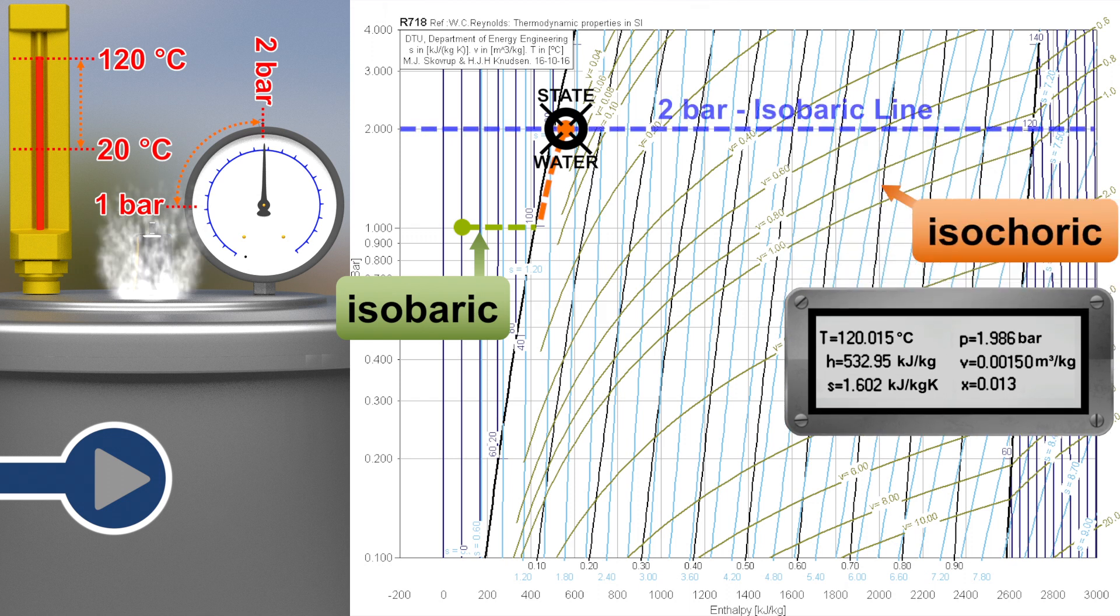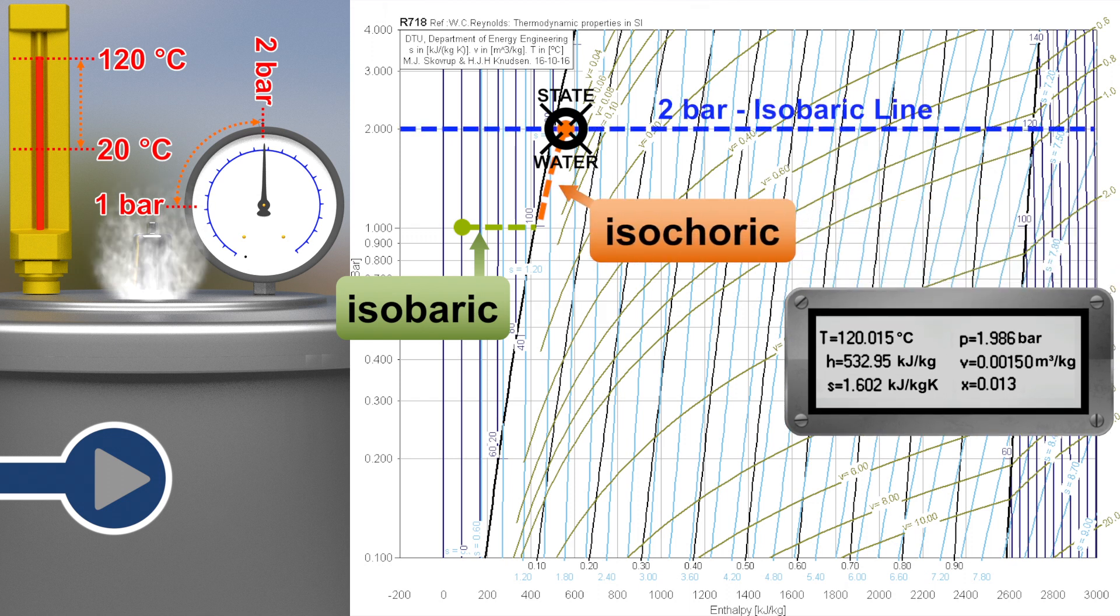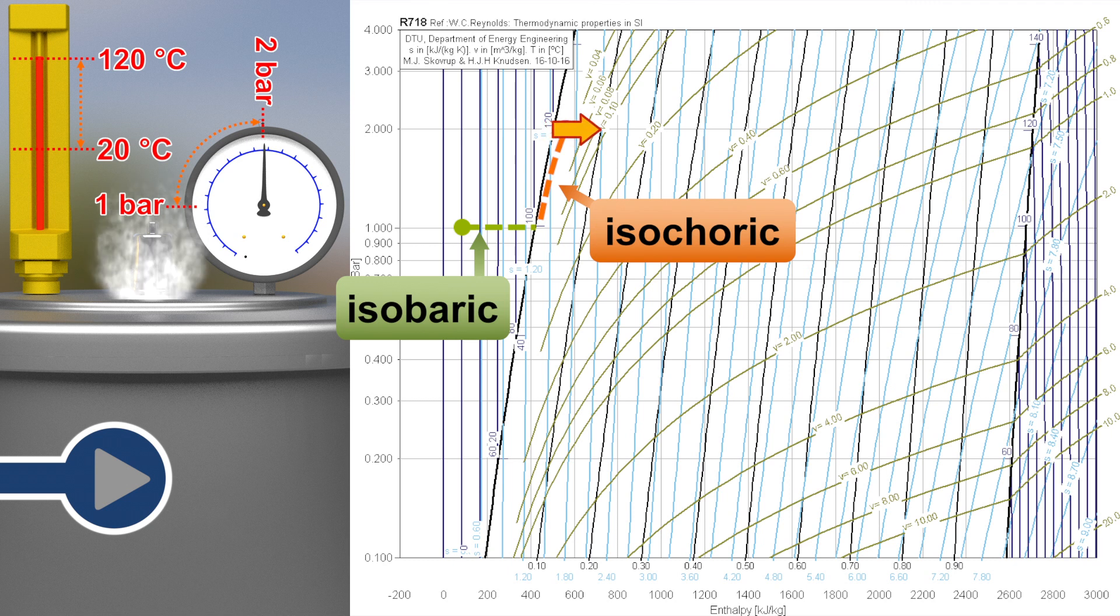At an absolute pressure of 2 bar, the overpressure valve opens and the steam escapes so that the pressure can no longer increase. It can be seen in the diagram that the temperature at this pressure is 120 degrees Celsius. If we let water continue boiling and have a continuous flow of escaping steam, the state in the pressure cooker changes along the isochoric line.